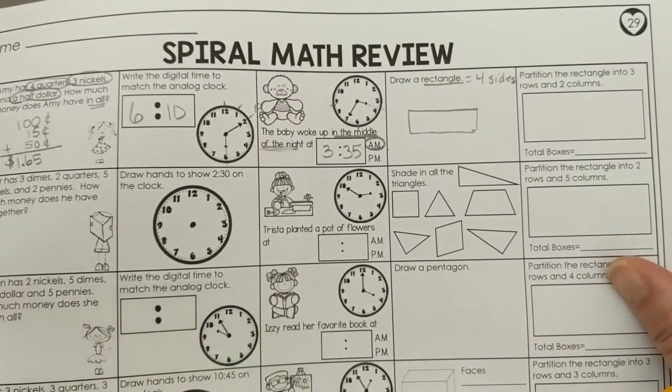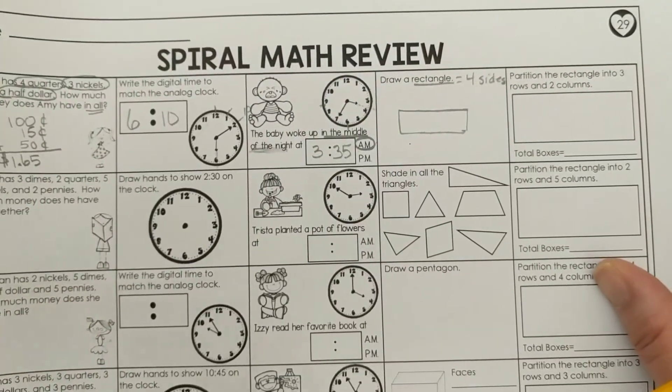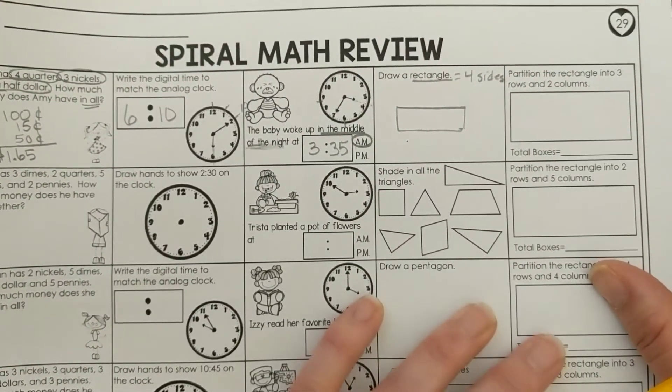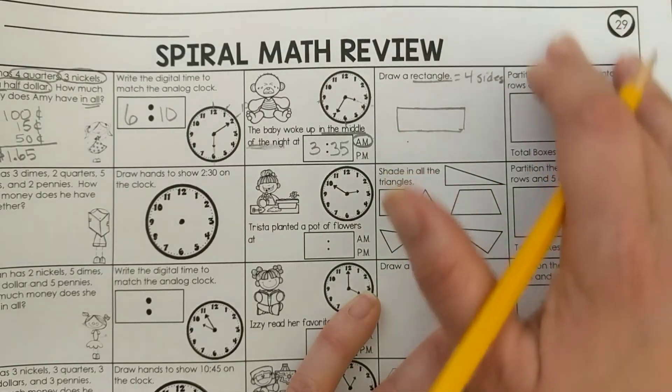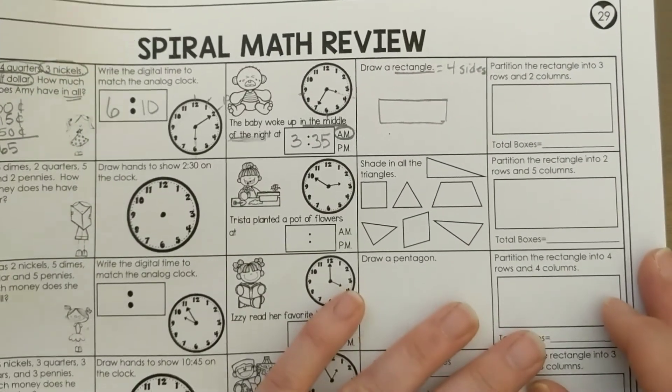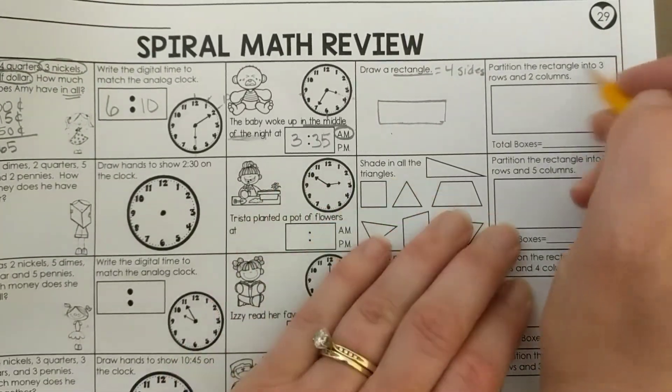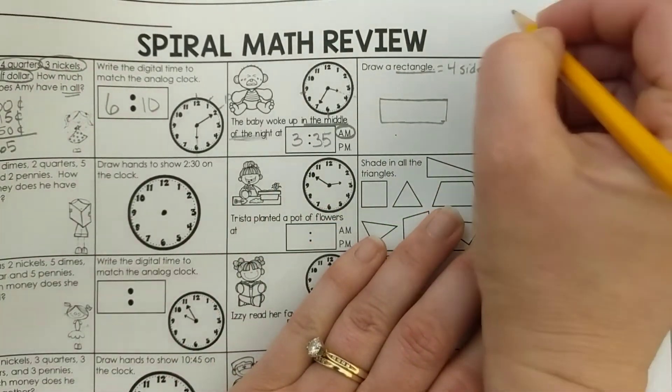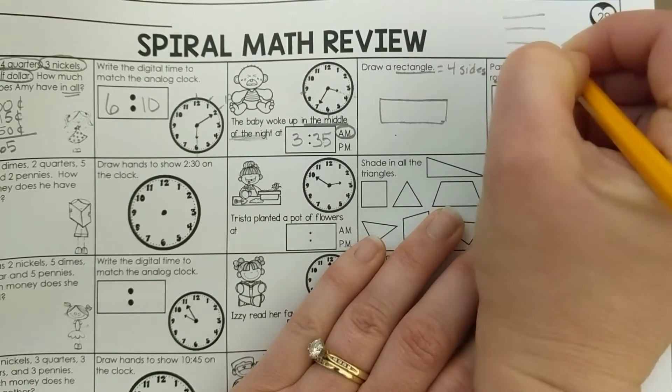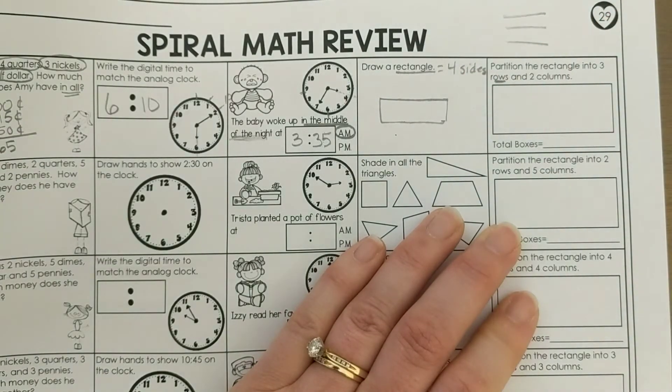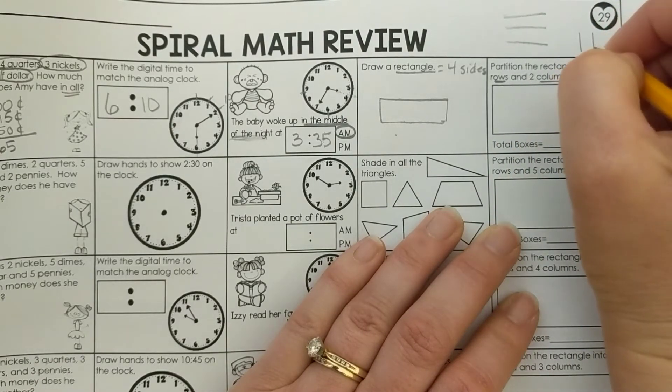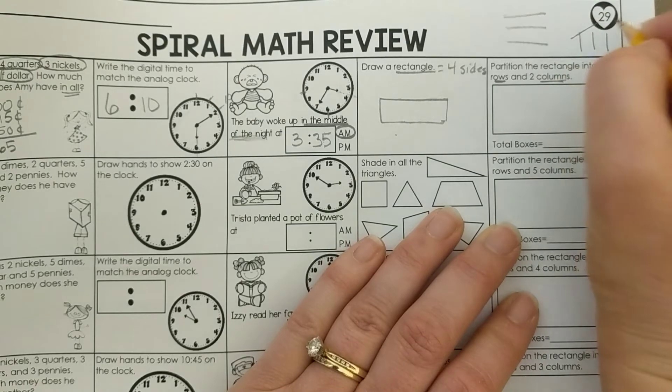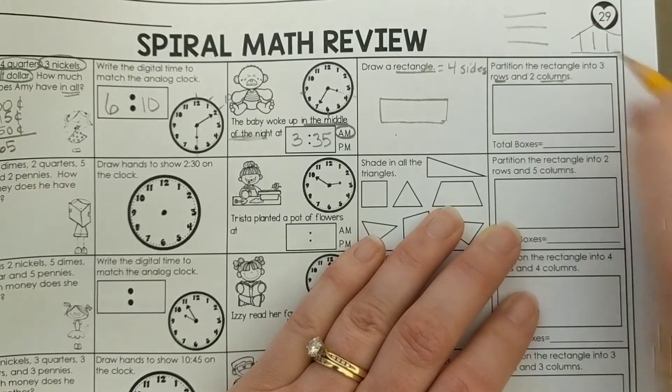On the last one, we need to partition the rectangle into three rows and two columns. This is our brand new section. We have not learned how to do this one yet, so let's see if you're able to figure this out. Rows go side to side, kind of like a row in church. Columns go up and down. Think about the White House; the White House has columns that go up and down.